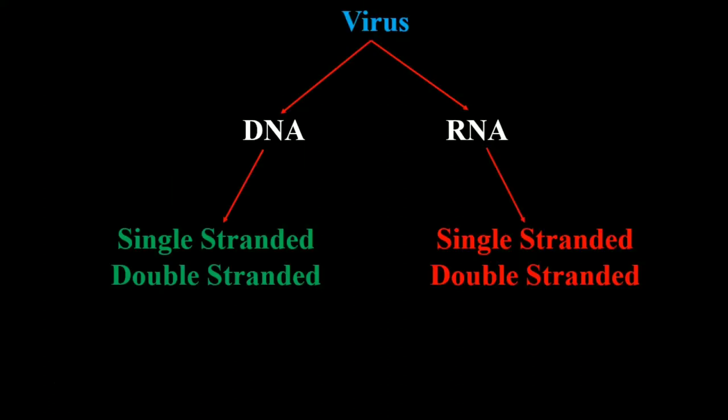For a virus, the genome can consist of either DNA or RNA. Certain viruses known as retroviruses have an RNA genome, while others contain a DNA genome. In terms of DNA, we can have a single-stranded DNA genome or a double-stranded DNA genome. Similarly for RNA, we can have a single-stranded RNA genome or a double-stranded RNA genome — and although double-stranded RNA is not one of the choices here, if it were, it could still be a correct answer.